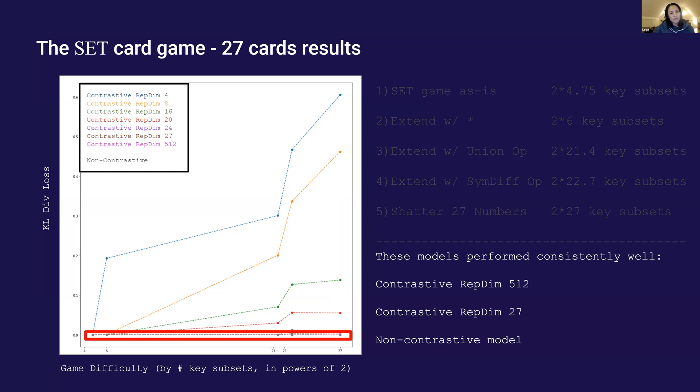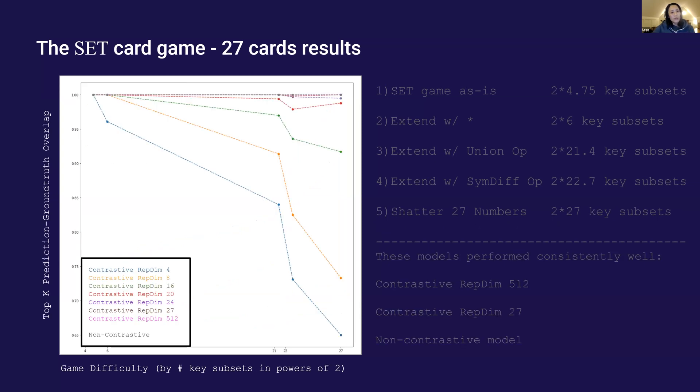Notice that throughout these games, the contrastive models with vector dimension 512, 27 and the non-contrastive model with half the parameters performed consistently well. The top K overlap metric shows a similar agreeing trend.